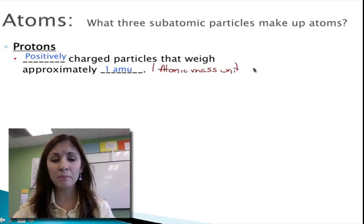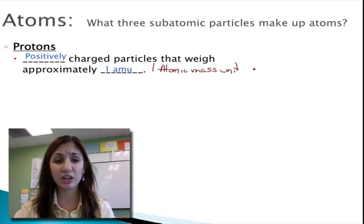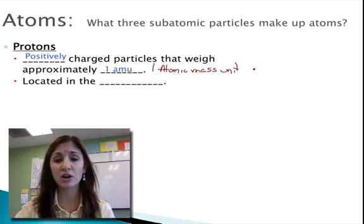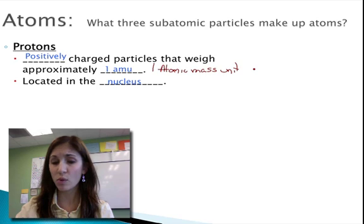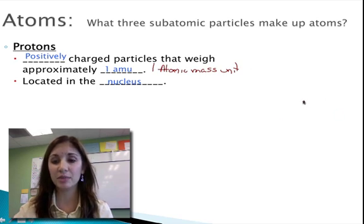The other particle that's found in the same location as the protons are neutrons. Both protons and neutrons are found in the nucleus of an atom. So if I wanted to draw a simplified atom, in the center part of it I would have protons and I would have neutrons.